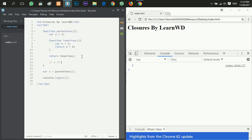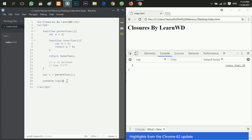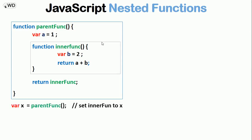But the a variable is deleted — so here's the paradox: how did this happen? When we set x equal to 'parentFang', we set 'innerFang' to x. When we call x, it returns 3, which means 'innerFang' has access to a even though the a variable is deleted. So what happened?